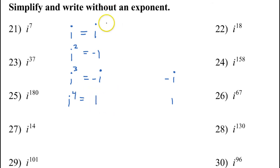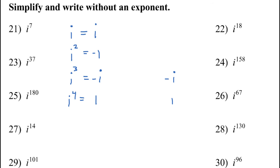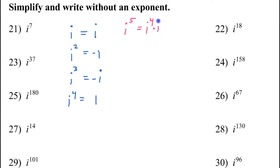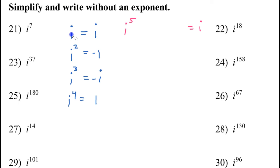So this is the background knowledge — we have these four facts to memorize. Now watch what happens if I go past i to the fourth power. Let's say i to the fifth power. i to the fifth power is the same thing as i to the fourth power times an extra i. But i to the fourth power is 1, so this would just be 1 times i, or simply i.